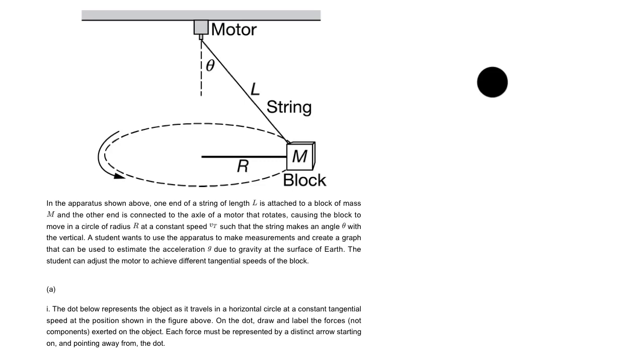So we have this apparatus has a string of length L attached to a block of mass m. The other end is connected to a motor that rotates, causing the block to move in a radius r at a speed vt. The string makes an angle theta. You want to get in the habit of highlighting what variables you're given in the problem and then look at what you're asked for.